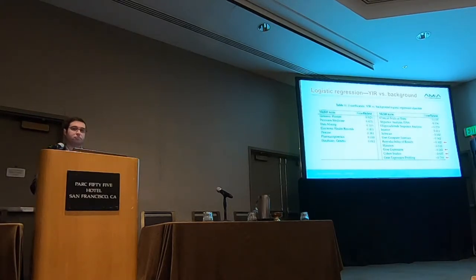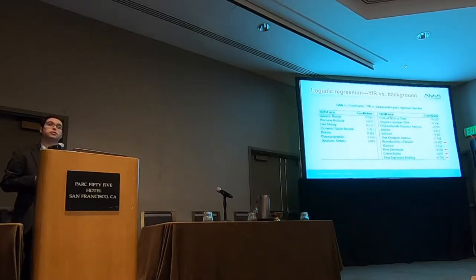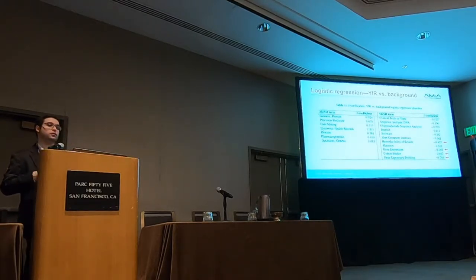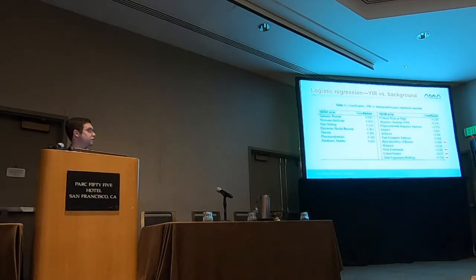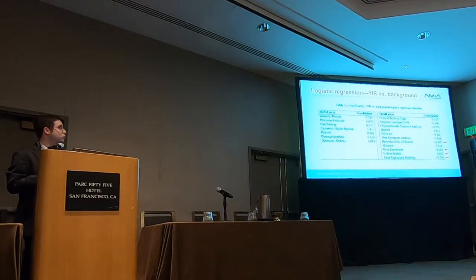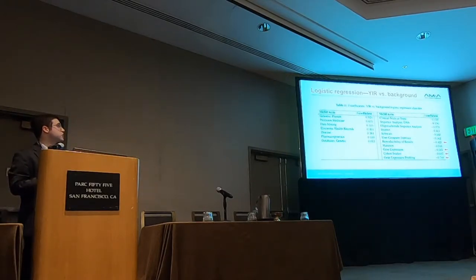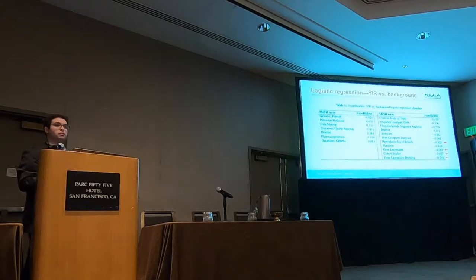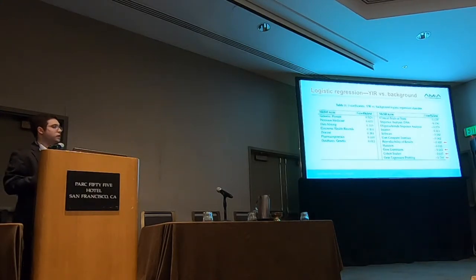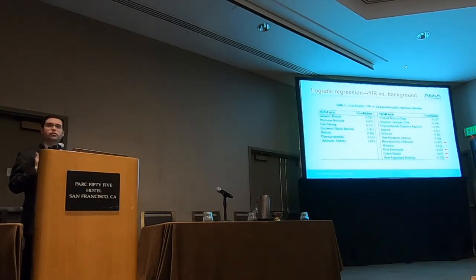We also explored, using logistic regression, the importances of MeSH terms in relation to Year-in-Review documents. We didn't want to predict whether a paper was Year-in-Review or not, but to see which terms are important. Running this logistic regression classifier with L1 regularization, we get beta coefficients that are non-zero. On the left-hand side you see MeSH terms that are predictive of a Year-in-Review article — things like genome, which is obviously relevant to translational bioinformatics, and other terms that make sense.